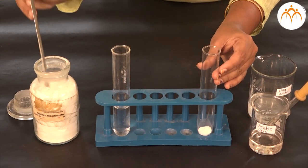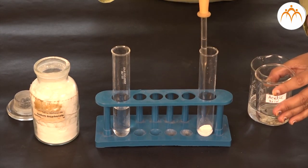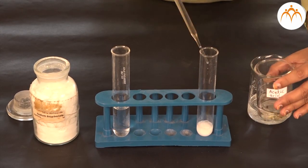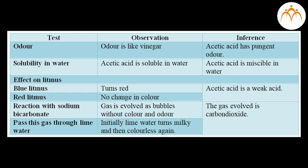Take two ml of acetic acid in a test tube, add a pinch of sodium bicarbonate, observe and note down the results. Students, write your observations in a tabular form. The table will contain three columns: test, observation, and inference.